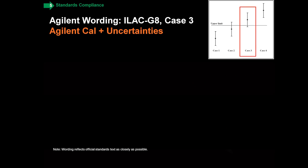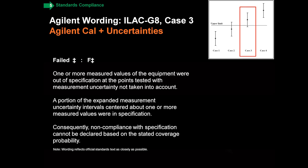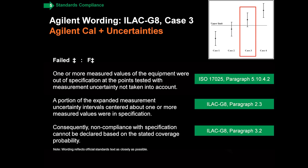Similarly, in the case where you observe it to fail — in other words, it's outside the spec as observed — but a portion of the measurement uncertainty also crosses, we have similar wording. You'll notice that we line those up with the key paragraphs in either 17025 and ILAC G8. So when 17025 says measurement uncertainty shall be taken into account, you'll know exactly how we've done that — we've lined it up and made it very precise for you.